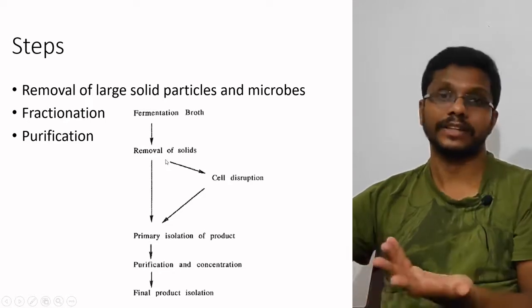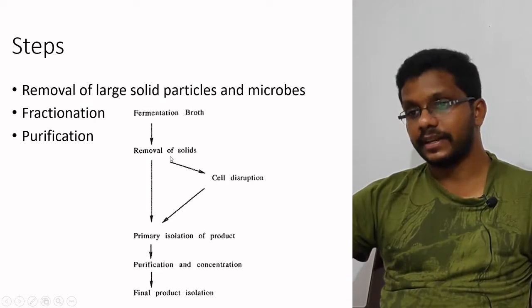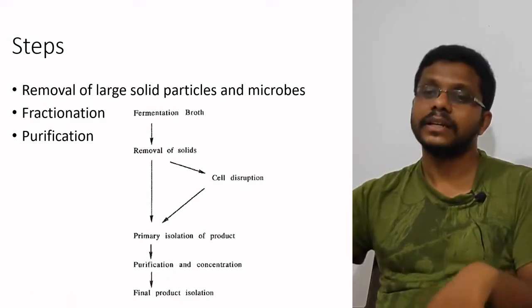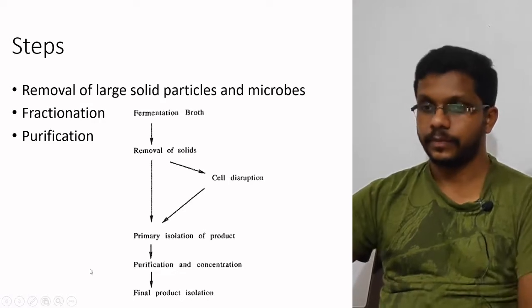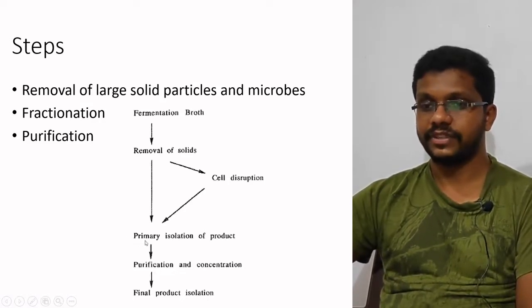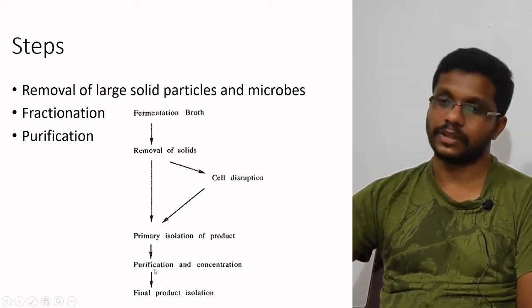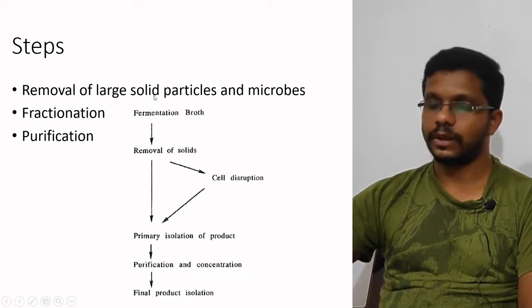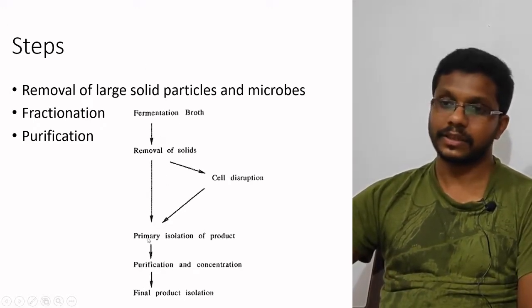If our product is an intracellular product, we separate the solids and discard the liquid part. The solid part undergoes cell disruption to break open the cell. Once the cell is open, we use that extract for isolation. In isolation, we first do a primary isolation of the product, then go for purification, then finishing of the product. These are the strategies for intracellular and extracellular products.